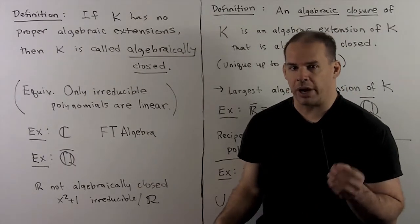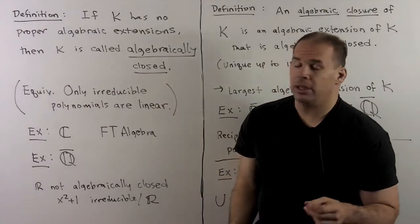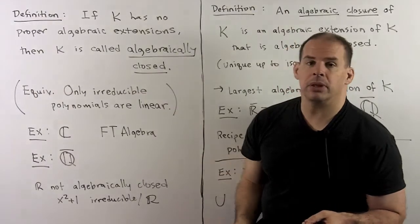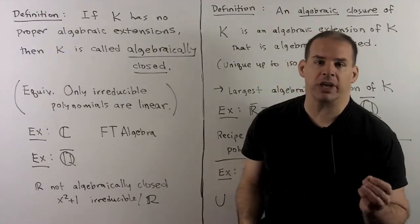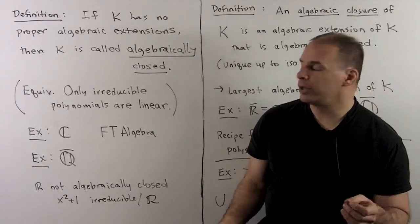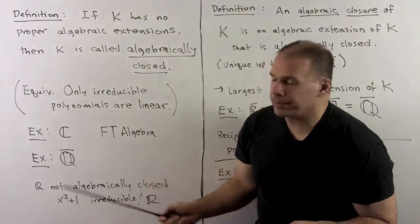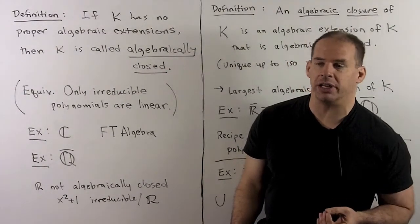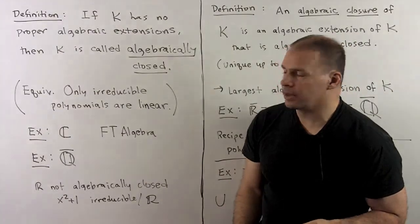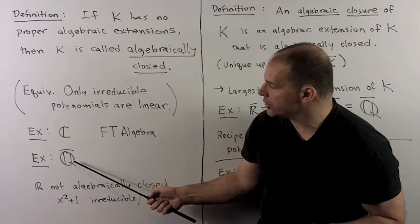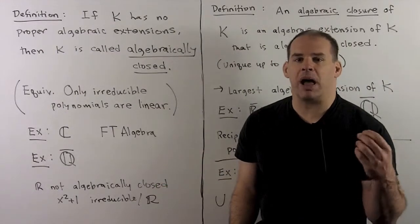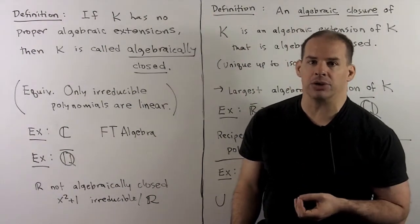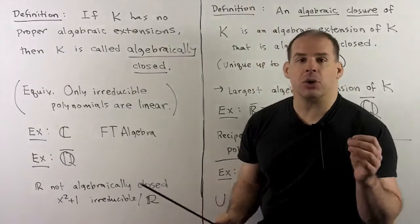We finish with the notion of algebraic closure. Definition: if k has no proper algebraic extensions, then k is called algebraically closed. Equivalently, the only irreducible polynomials over k are linear. For example, we have the complex numbers. By the fundamental theorem of algebra, any nonconstant polynomial over C factors linearly over C, so C is algebraically closed. Likewise, we have the algebraic numbers: any nonconstant polynomial with coefficients in the algebraic numbers has all its roots in the algebraic numbers, so they factor linearly — algebraically closed.